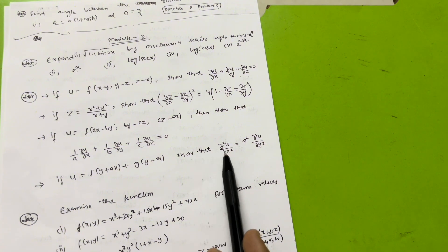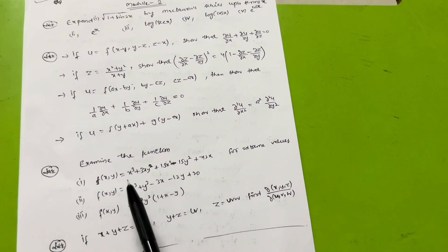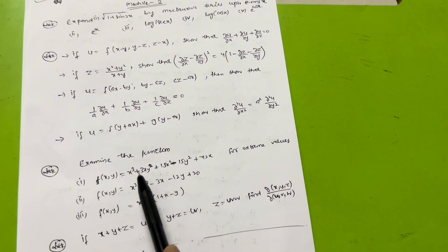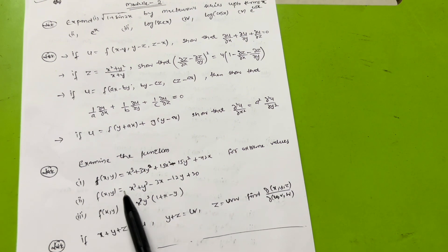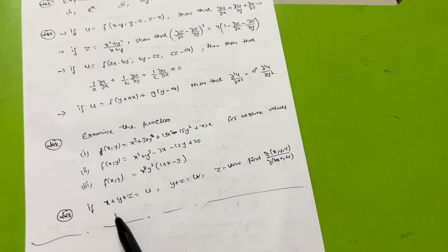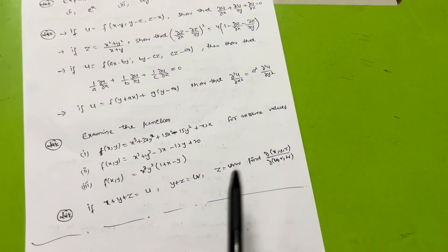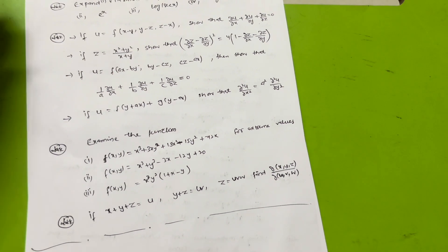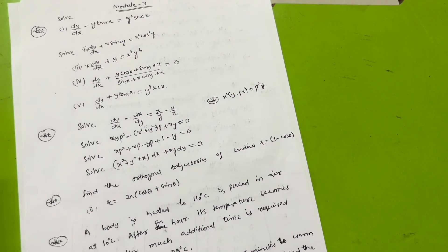If u = f(y + ax) + g(y − ax), show that ∂²u/∂x² = a²·∂²u/∂y². Examine the function for extreme values: f(x, y) = x³ + 3xy² + 15x² − 15y² + 72x; f(x, y) = x³ + y³ − 3x − 12y + 20; f(x, y) = x³y²(1 + x − y). Also, the Jacobian problem: if x + y + z = u, y + z = uv, z = uvw, find ∂(x,y,z)/∂(u,v,w). For Module 2, focus only on the first part, which is easier.